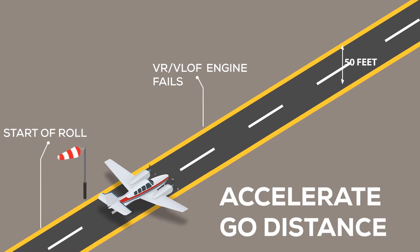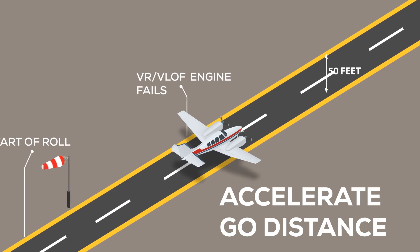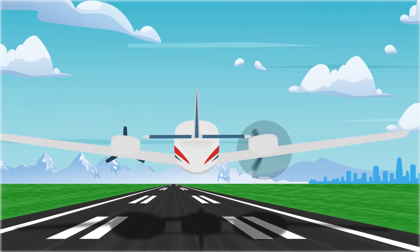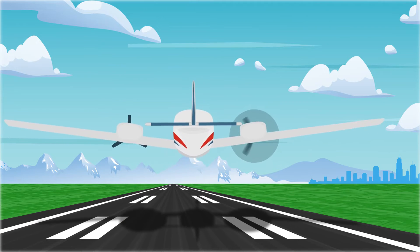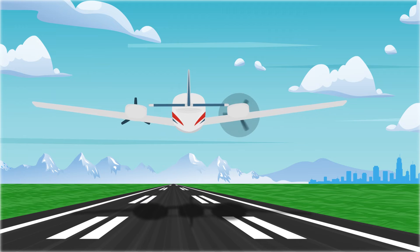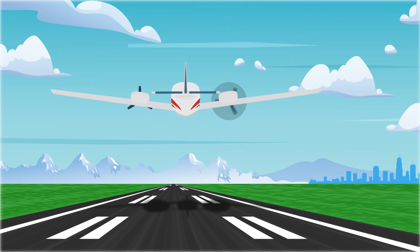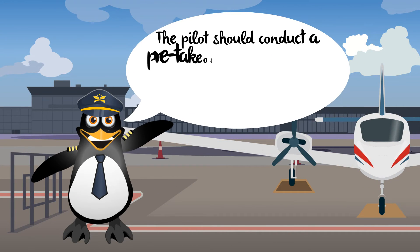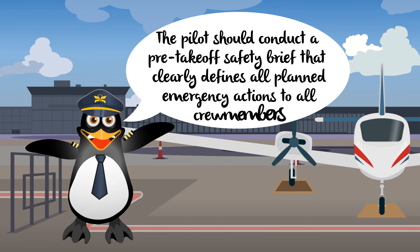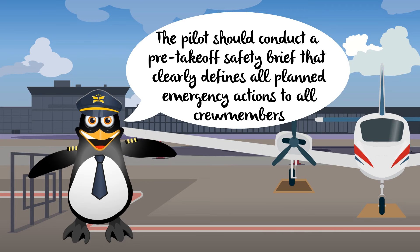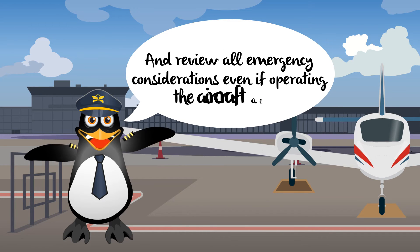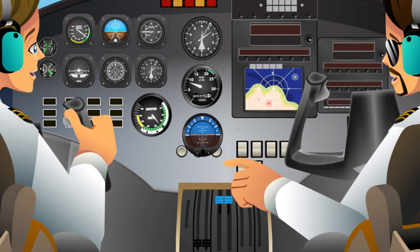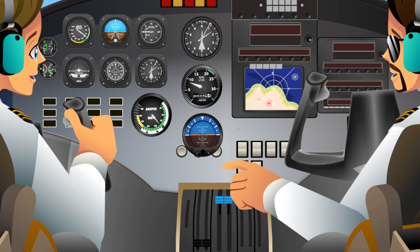The accelerate go distance only describes the distance at which an aircraft will only be 50 feet above the ground after takeoff with one engine inoperative. Multi-engine aircraft operating with only one engine will have severely degraded performance, such as the ability to climb and maneuver to return back to the airport. The pilot should conduct a pre-takeoff safety brief that clearly defines all planned emergency actions to all crew members and review all emergency considerations even if operating the aircraft alone. Indecision at the moment an emergency occurs degrades reaction time and the ability to make a proper response.